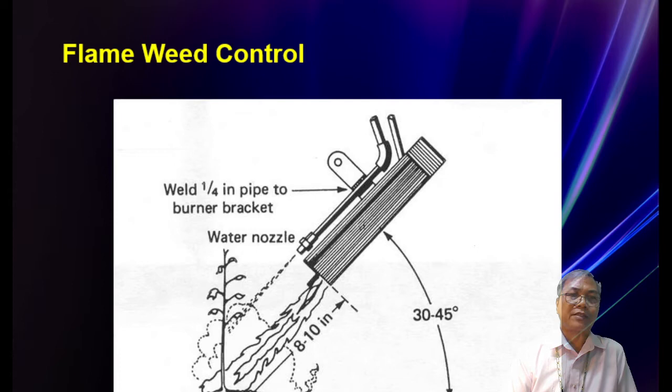The next method is flame weed control — selective burning of weeds in between crops. These pictures show the flame control weeder in operation.